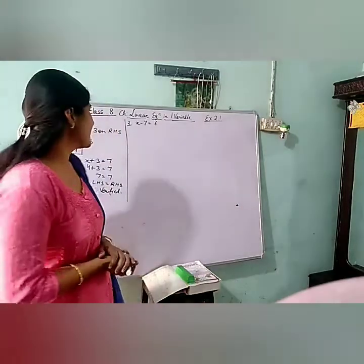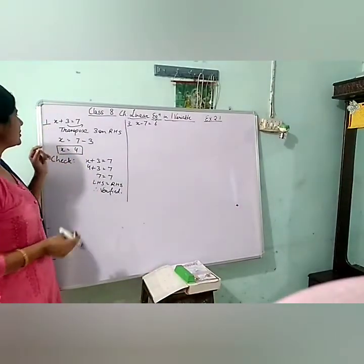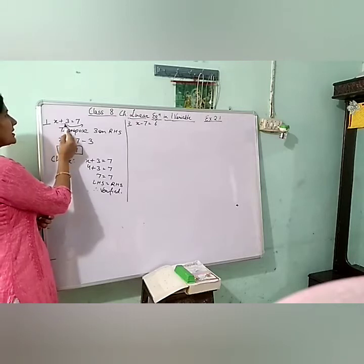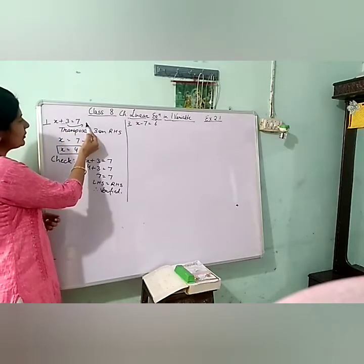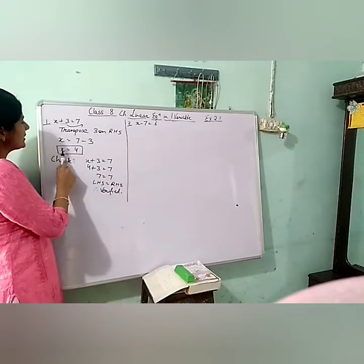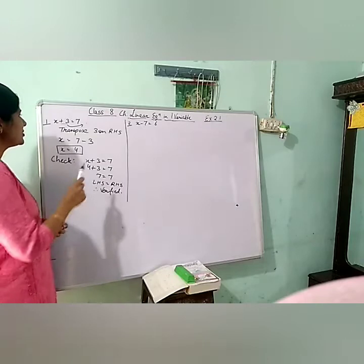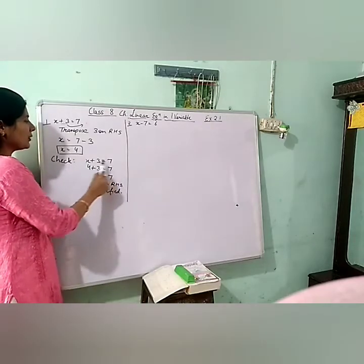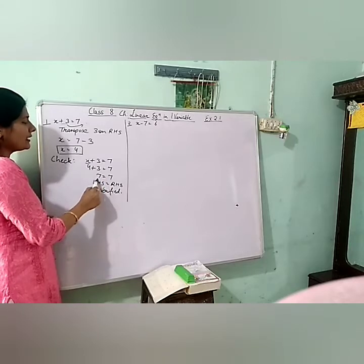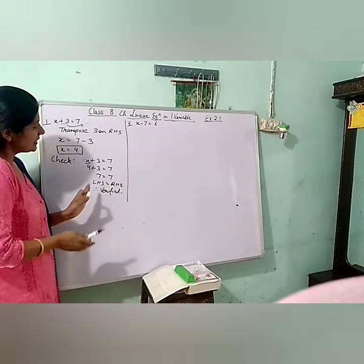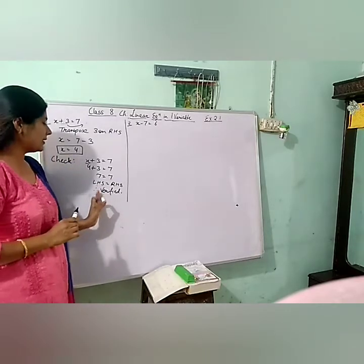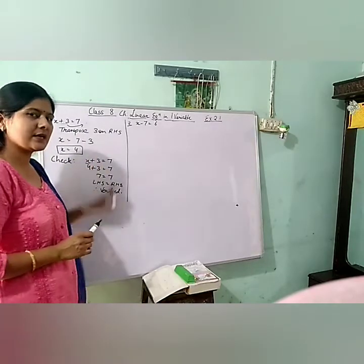Moving to the exercise, this is the first question. x plus 3 equals 7. If you move the 3 to the right hand side, it becomes negative, so 7 minus 3 is equal to 4. The value of x is 4. Checking the equation: 4 plus 3 equals 7, so left hand side equals right hand side — therefore verified.